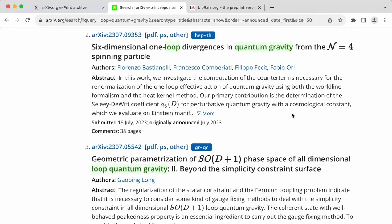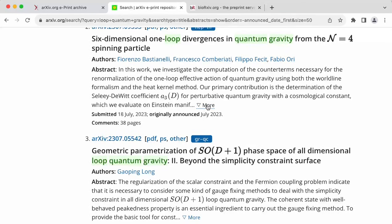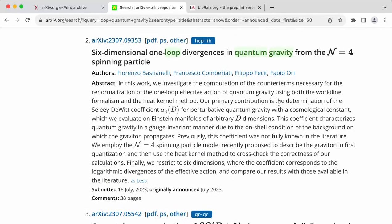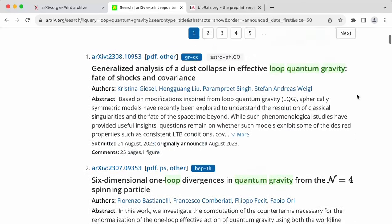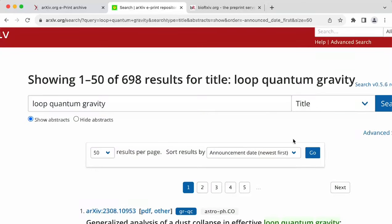So let's say we look at this paper and we are like, wow, that's a great title. Six-dimensional one-loop divergences in quantum gravity from the n equals 4 spinning particle. Now, of course, if you're a beginning researcher, most of these words will have very little meaning for you. And that's completely fine because the whole goal of this video is to show you how to do research.